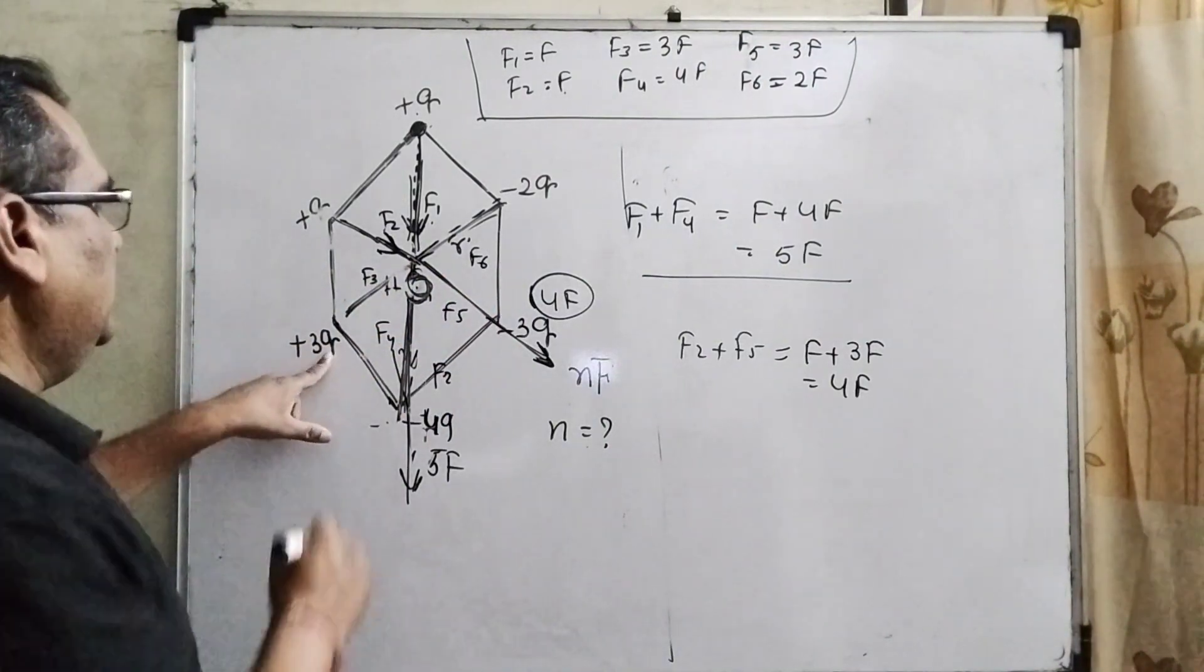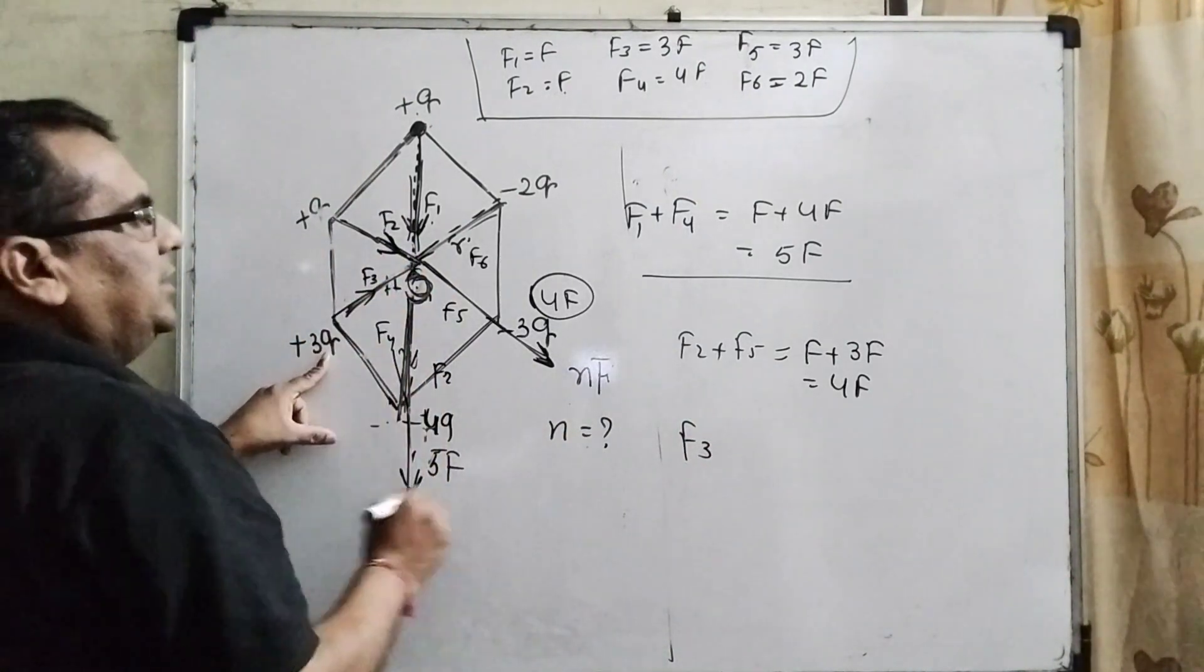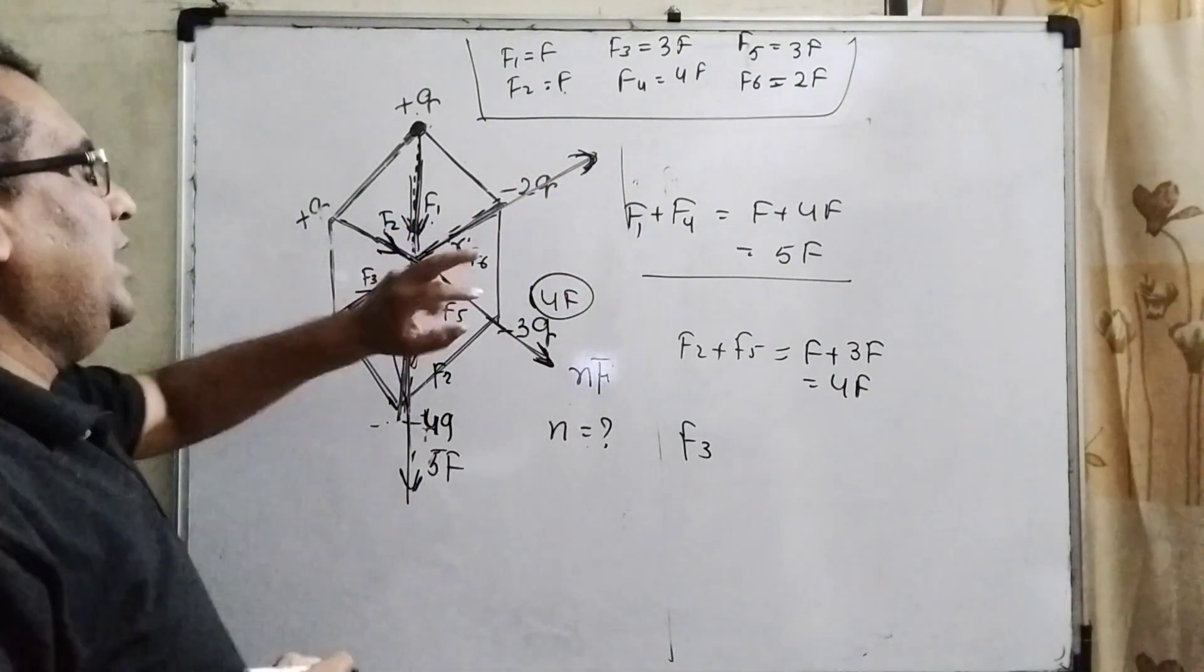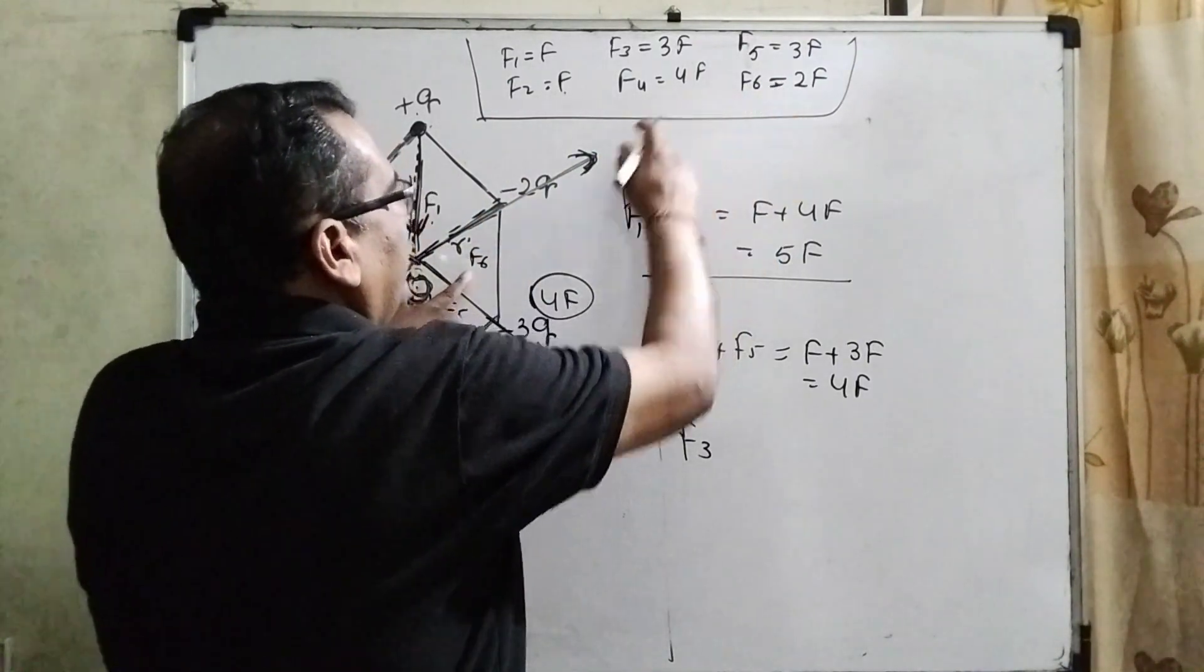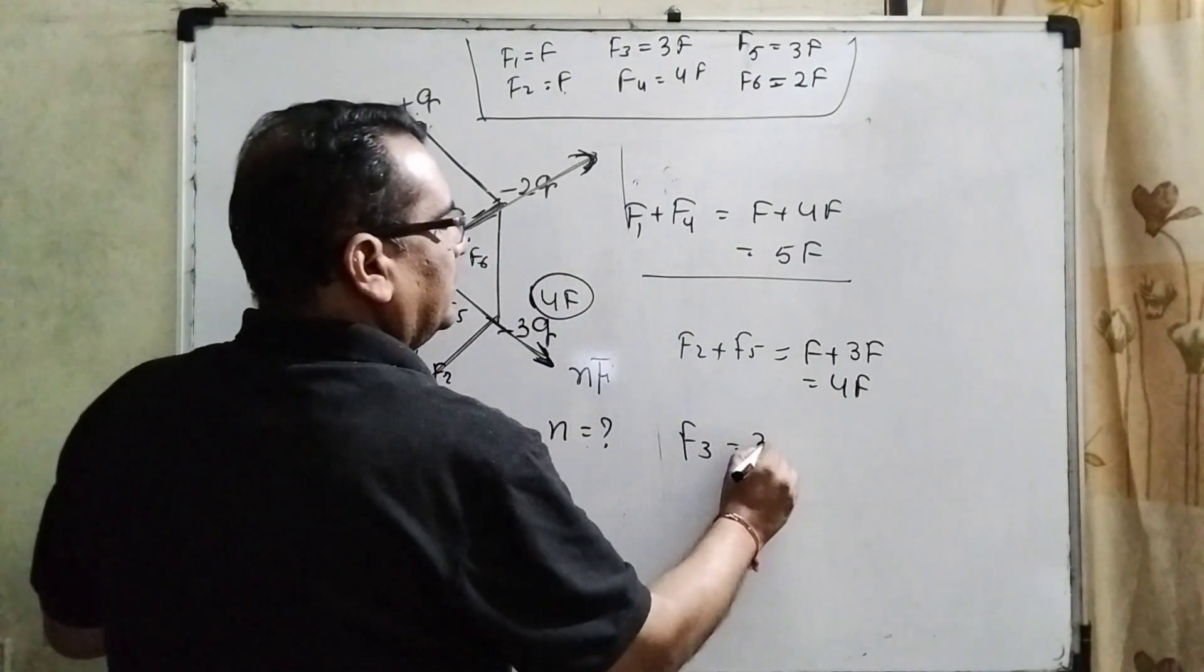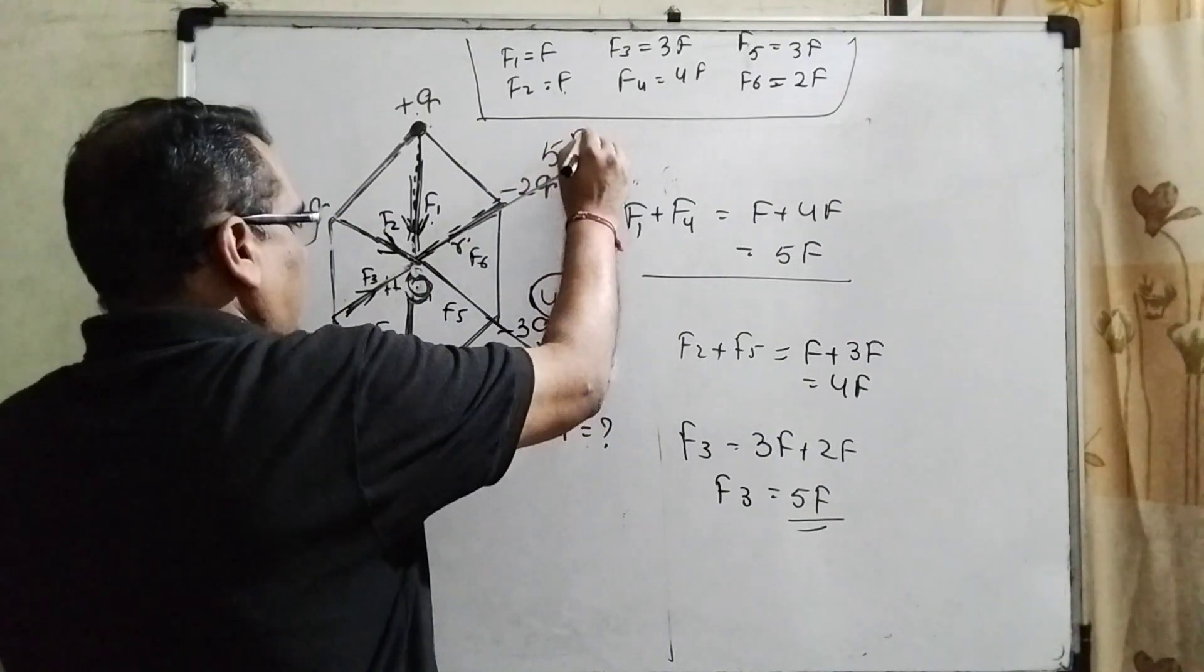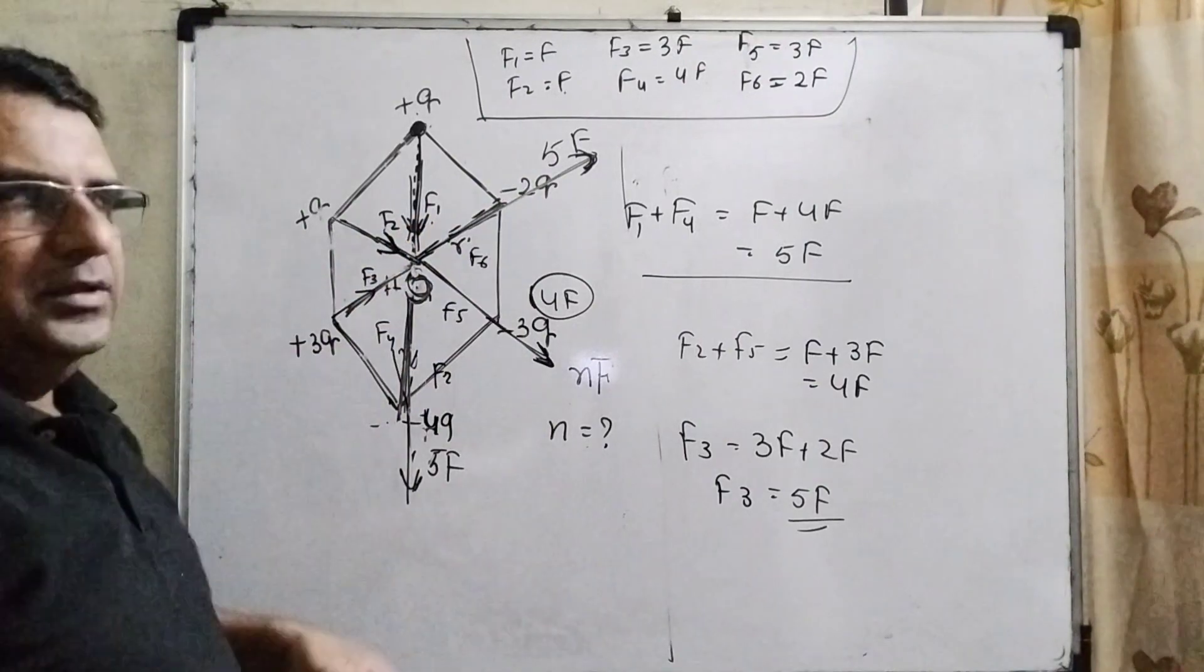Now, you can see at the F3. Again, this is acting towards the center and here plus to minus means overall acting direction is towards to the minus 2q. So, minus 2q means F6. You can see that F6 is 2F and F3 is 3F. It is 2F. It means F3 equal to 5F. So, here it is again 5F, 5F, 4F and 5F again. Redraw this diagram again.